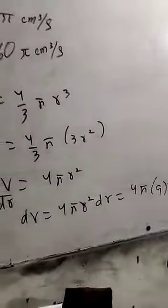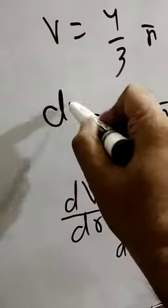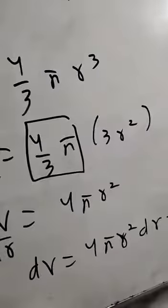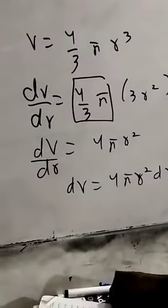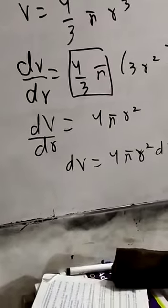When we take the derivative dV/dr, with 4/3π as the constant, we get 3r². The 3s cancel, giving us 4πr². If we take this derivative,